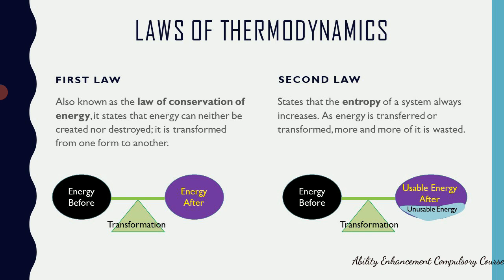The second law of thermodynamics has several statements. One common statement is that heat can flow only from a hot object towards a cold object and never the other way. But what is more important in biology is the concept of entropy. The second law states that the entropy of a system always increases. Entropy is a measure of disorderness or randomness of a system — it is basically energy unavailable to do work, or a measure of dispersal of energy. This disorder keeps increasing with every transformation that occurs.